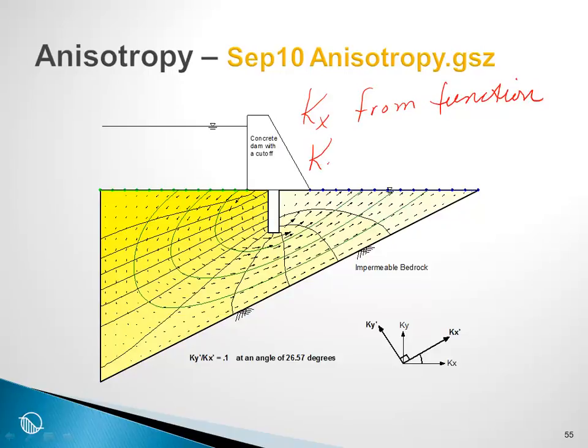Ky is always computed as ratio times kx. So to repeat, kx always comes from the function and ky is always computed from kx times the specified ratio.